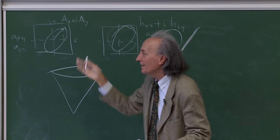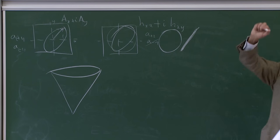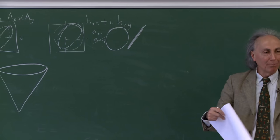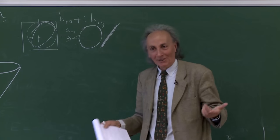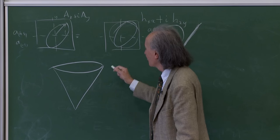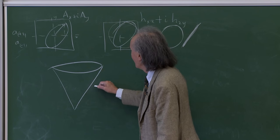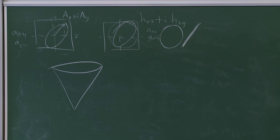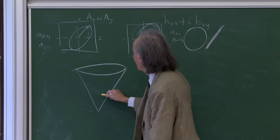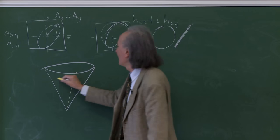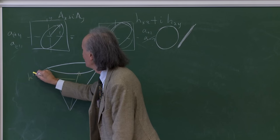Now that Yvonne Choquet-Bruhat is with us — the person who first proved mathematically the existence of exact solutions of Einstein's equations including domain of dependence and gravitational wave propagation, and who discussed with Einstein in Princeton in 1952 — let me move to multipolar expansions.